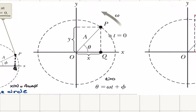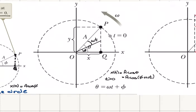Then I move on to a different point in time, where t is greater than 0. What I find is that point P has moved to a new angular position, theta. First it was phi, now it is theta, where theta is omega*t plus phi. I moved by a total angular displacement omega*t, so phi plus omega*t equals theta. The new position of point Q at time t is x(t) = A cosine theta = A cosine(phi + omega*t).